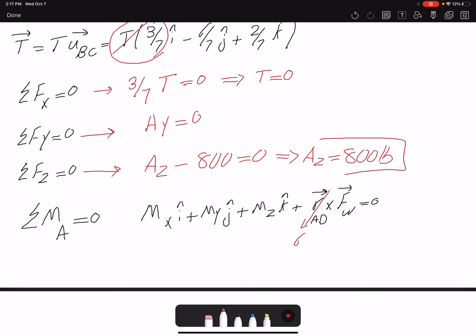is simply 6j. It's going from A to D in positive Y direction. And Fw is negative 800k. So 6j cross negative 800 would be 4,800.